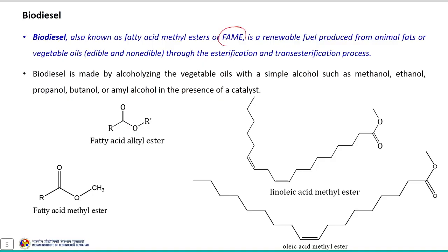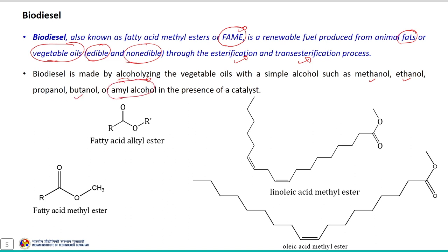Biodiesel is also known as a fatty acid methyl ester and commonly referred to as FAME. It is a renewable fuel produced from animal fats or vegetable oils — mostly edible or non-edible oils — through the process of esterification and transesterification. Biodiesel is made by alcoholizing vegetable oils with simple alcohol such as methanol, ethanol, propanol, butanol or amyl alcohol in the presence of a catalyst.